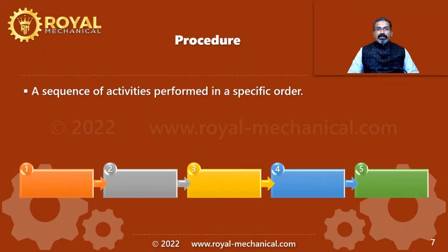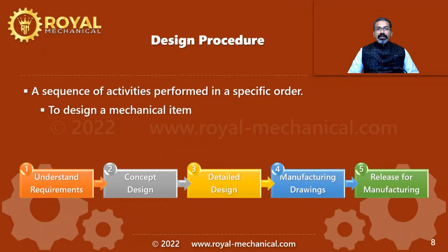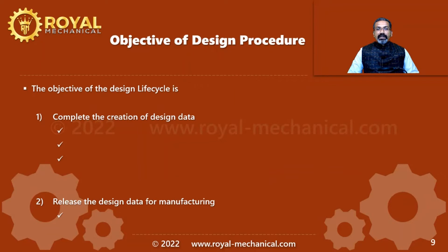What is a procedure? A procedure is nothing but a sequence of activities performed in a specific order. So, a design procedure is nothing but a sequence of activities performed in a specific order to design a mechanical item — something like a car, an aircraft, a robot. In our case, it is a press tool. The objective of the design procedure is to successfully complete the creation of design data and submit this design data for manufacturing.